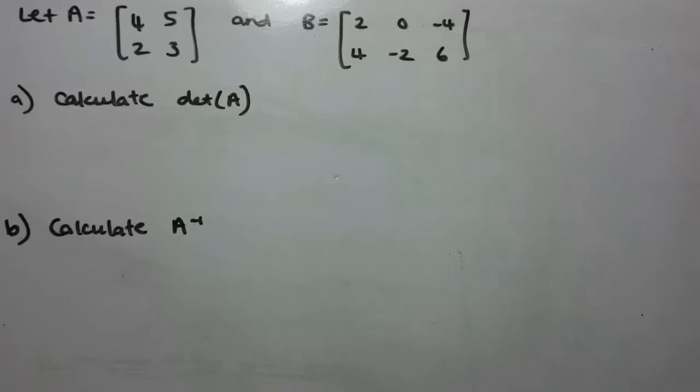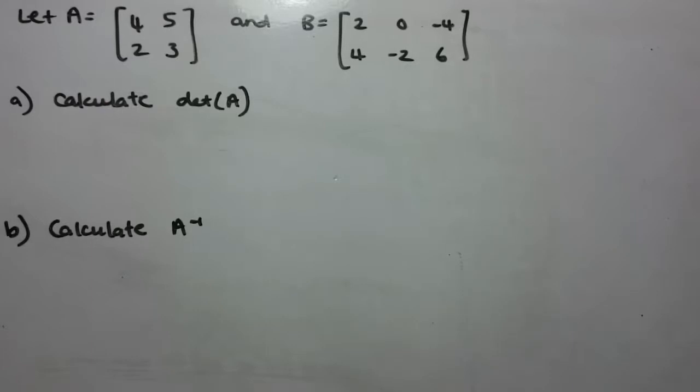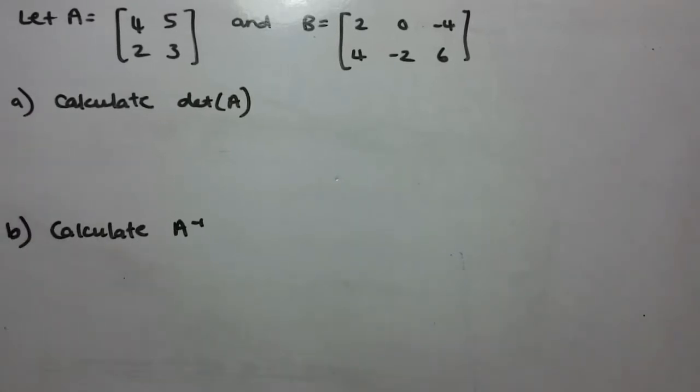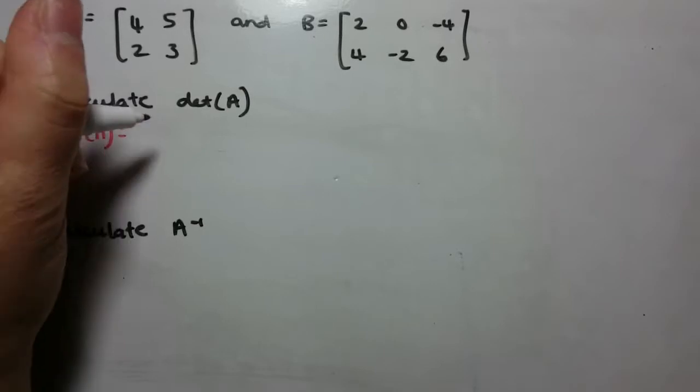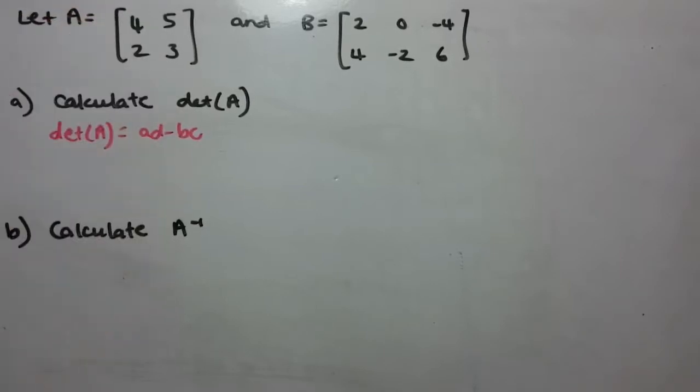So we've got a couple of matrices to find, we've got A and B, and we want to calculate the determinant first and then calculate the inverse. So remember that your determinant is given by AD minus BC, where A and D are on your leading diagonal.